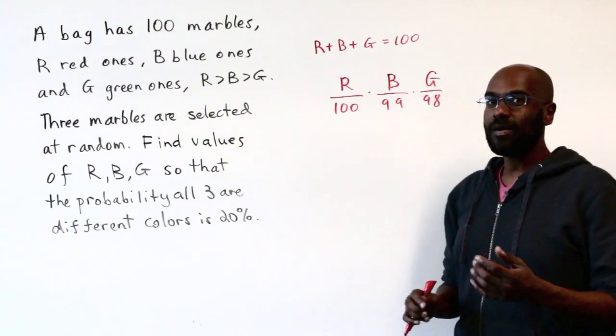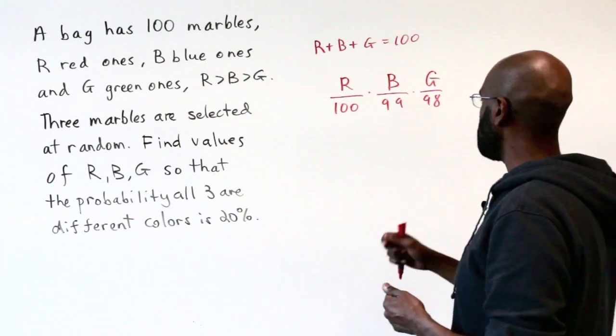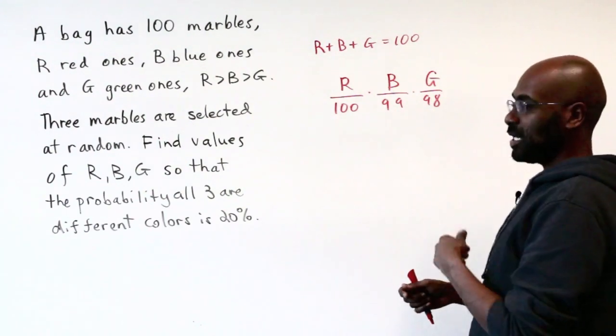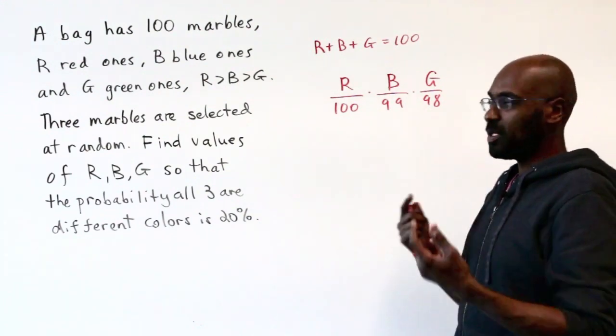So with the product of these three, however, we could have selected these in a different order, like RGB or GRB or GBR. The number of ways we could have done this is six different ways permuting the colors.